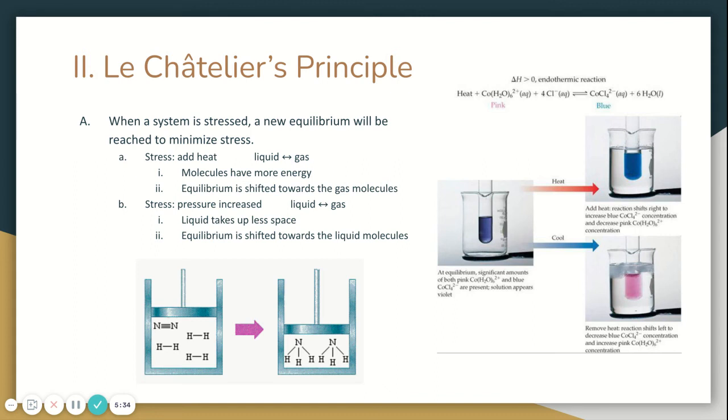For example, when you add heat to a system that's going from liquid to gas, that's going to force more liquid particles to become gas. There's going to be an initial shift toward the gas particles, but a new equilibrium will be reached because that will make more of those gas particles become liquid again.